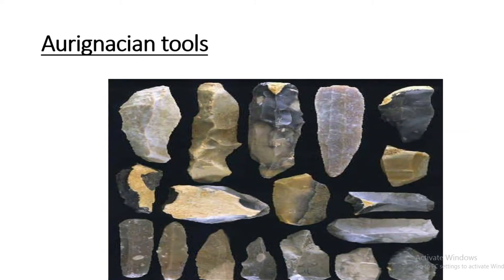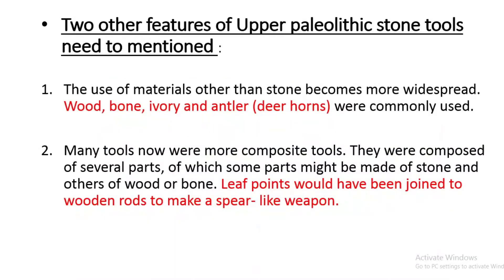This image is an example of an Aurignacian tool, showing that tool-making had developed considerably. Two other key features of Upper Paleolithic stone tools are worth noting. The use of materials other than stone became more widespread, including wood, bone, ivory, antler, and deer horns.